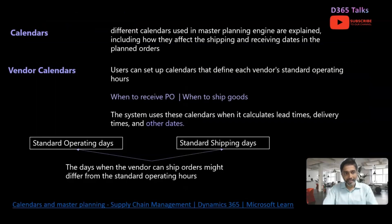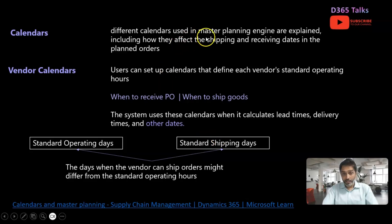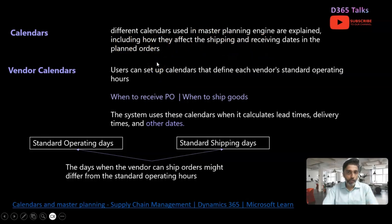Talking about the calendar types, first of all there are various types of calendars which need to be configured in the system for Master Planning to pick the appropriate calendar schedules whenever the shipping and receipt dates are getting calculated. Here we will primarily be looking into three different types of calendars: the vendor calendar, the transport calendar, and the warehouse calendar.